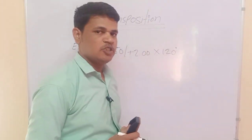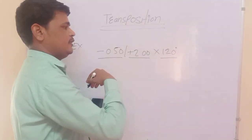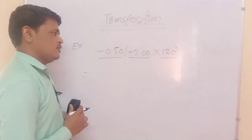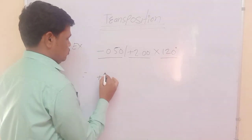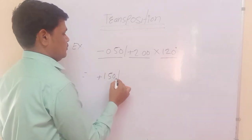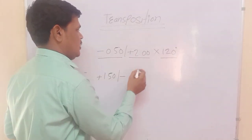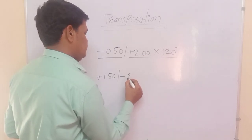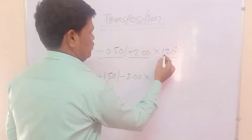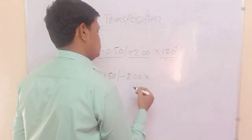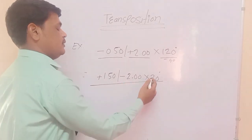Third example: -0.5 diopter sphere, +2 diopter cylindrical at 120 degree axis. Rule one — add sphere plus cylindrical: -0.5 plus +2 equals +1.5. Rule two — change the sign of cylindrical: plus becomes minus, value stays the same: -2 diopters. The axis is 120 degrees, which is more than 90, so we subtract 90: 120 minus 90 equals 30 degrees. Final transposition: +1.5 diopter sphere, -2 diopter cylindrical at 30 degrees.